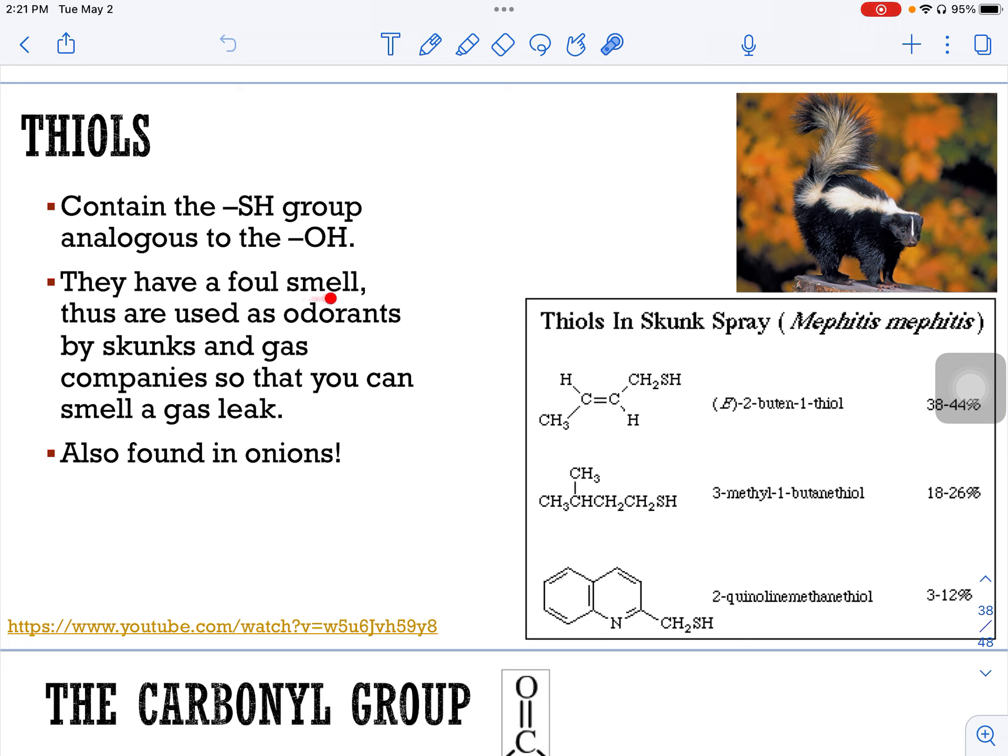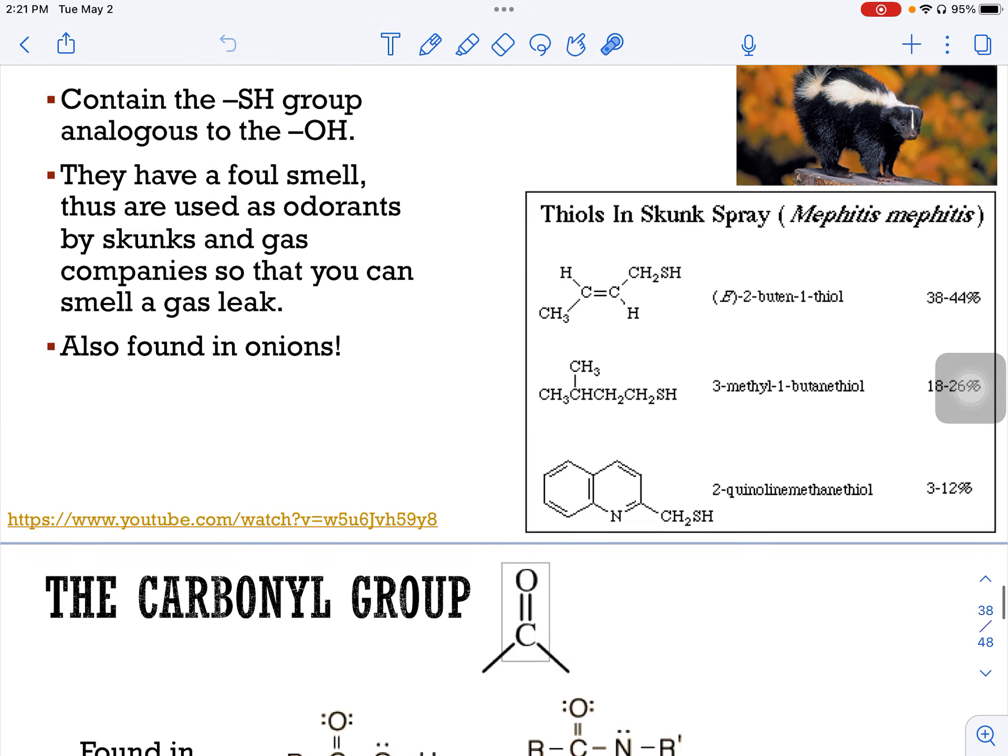They have a foul smell and they're used as odorants by skunks and gas companies so that you can smell a gas leak. It turns out that the natural gas that comes into our homes has no scent and we couldn't smell it if it weren't for the thiol that was added to it. Thiols are also found in onions. They're really stinky.